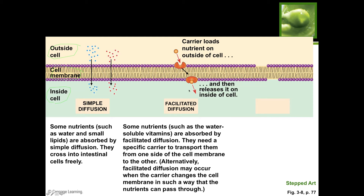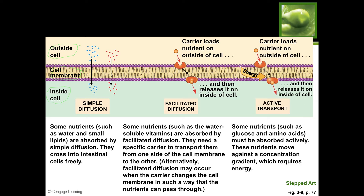The next absorption type requires a carrier - facilitated diffusion. The carrier loads the nutrient outside the cell and releases it inside the cell. Think of this like a door with a lock: you need the key to get in because you're too big to sneak underneath the door. Some nutrients such as water-soluble vitamins require facilitated diffusion - they need something to get them through.